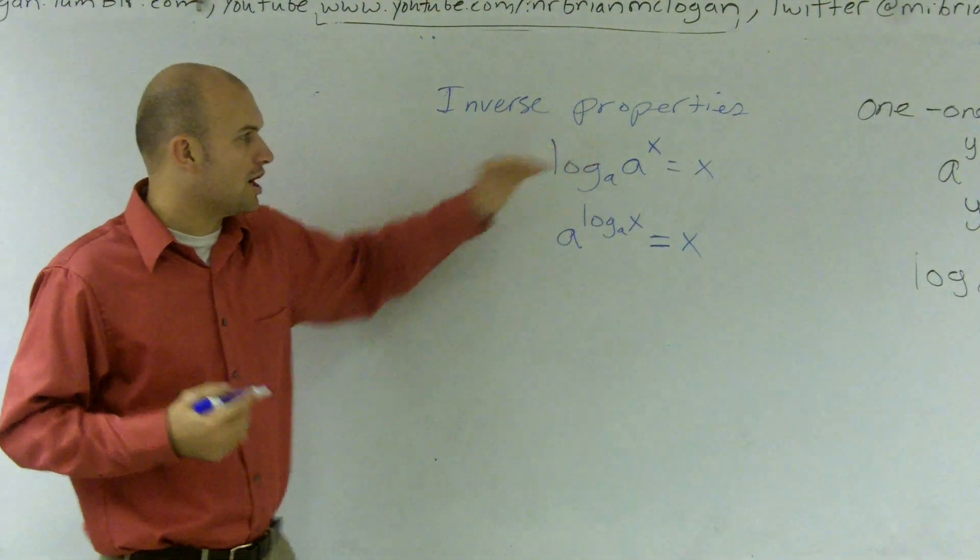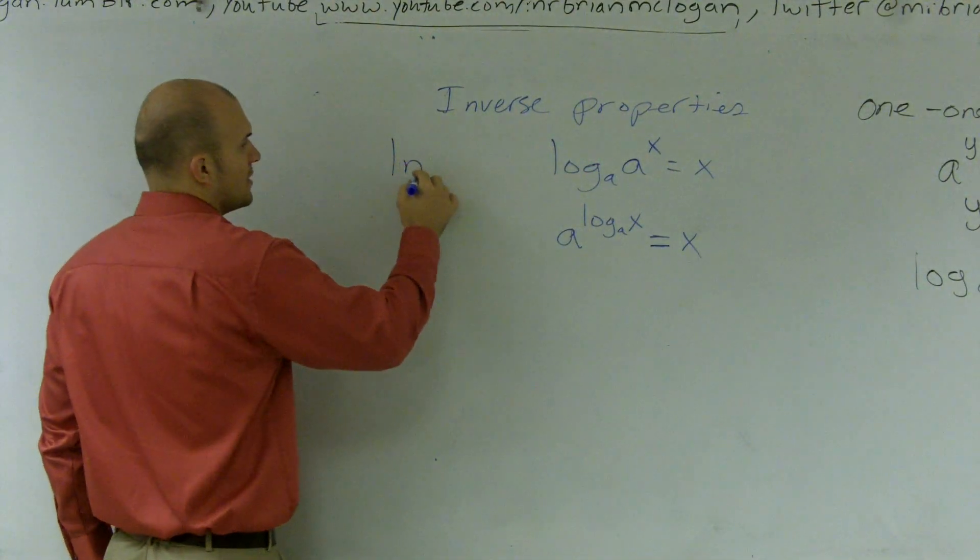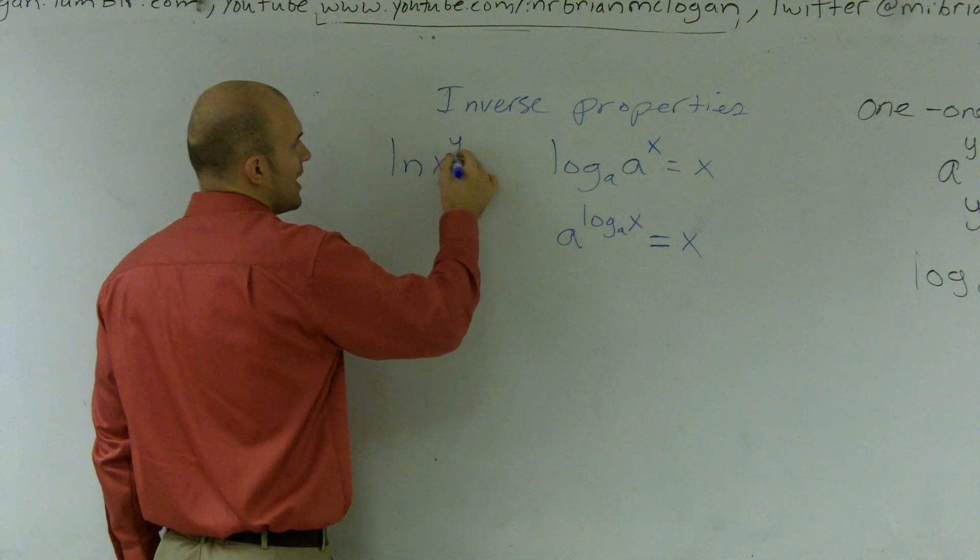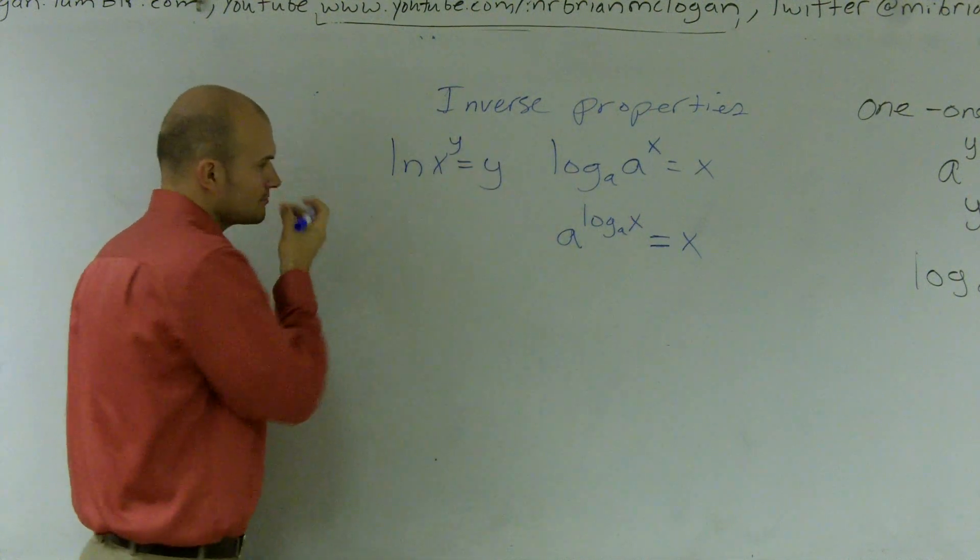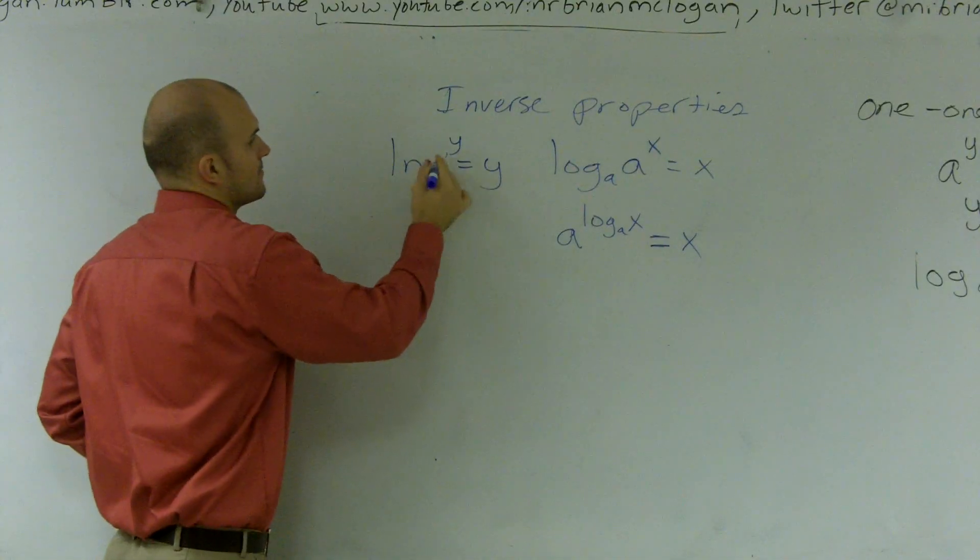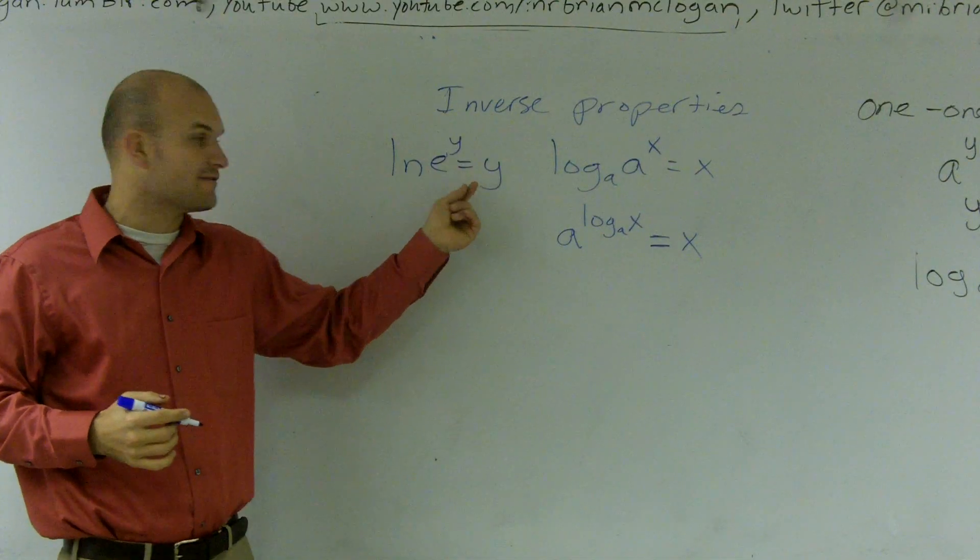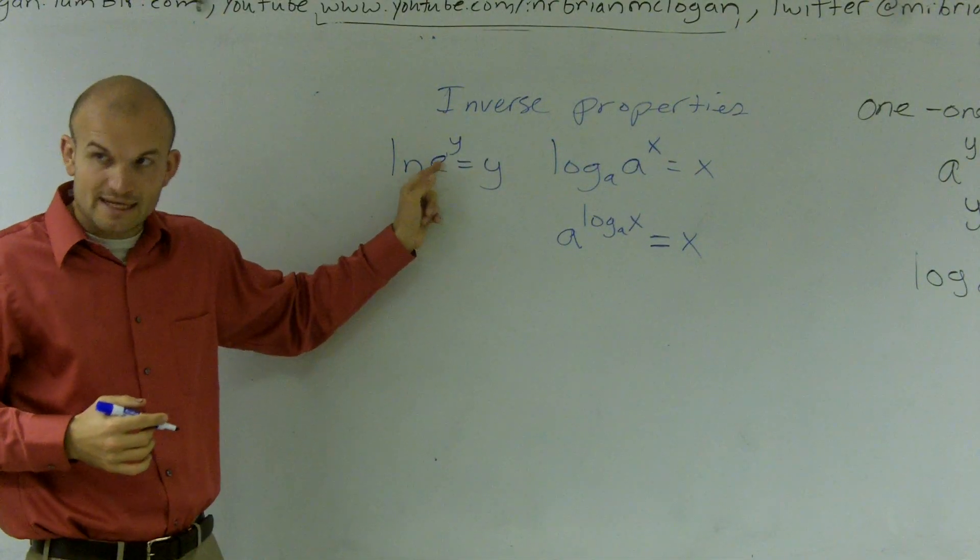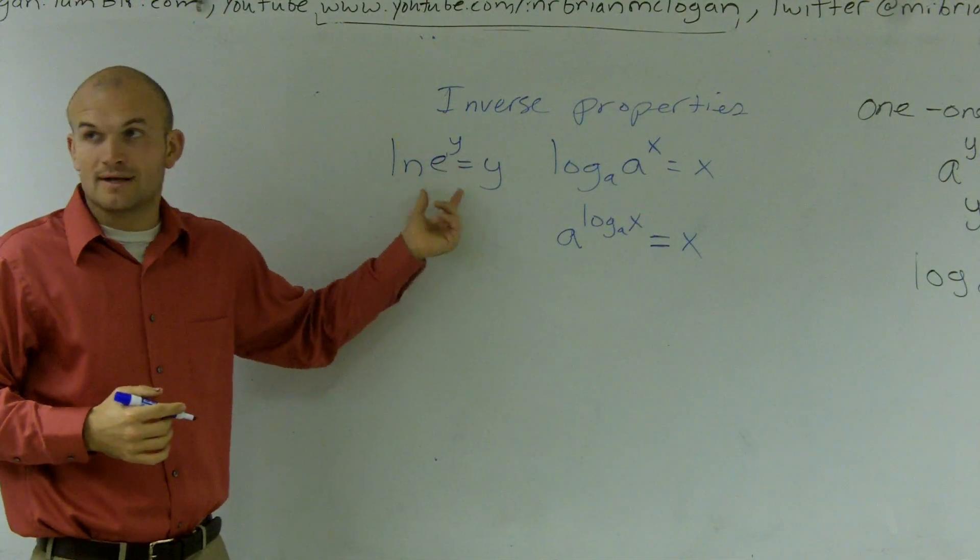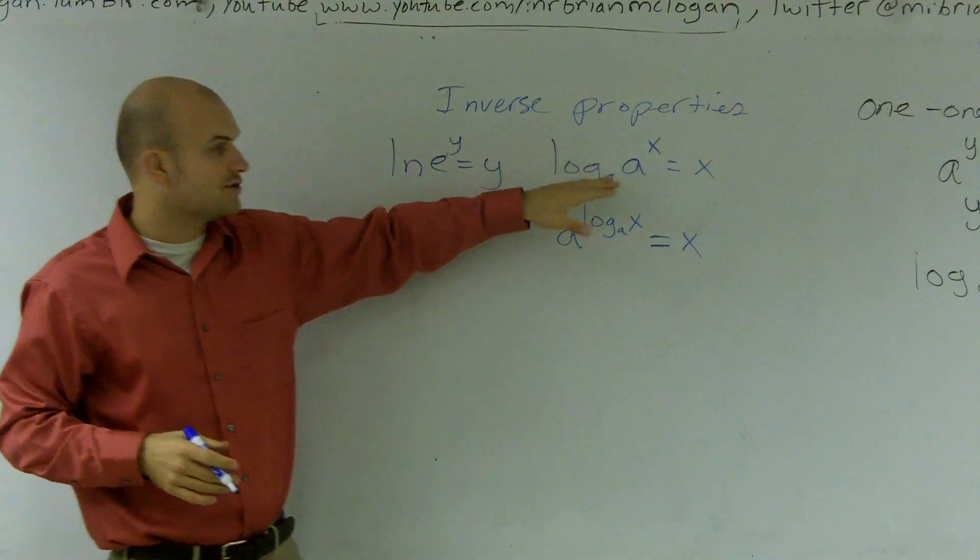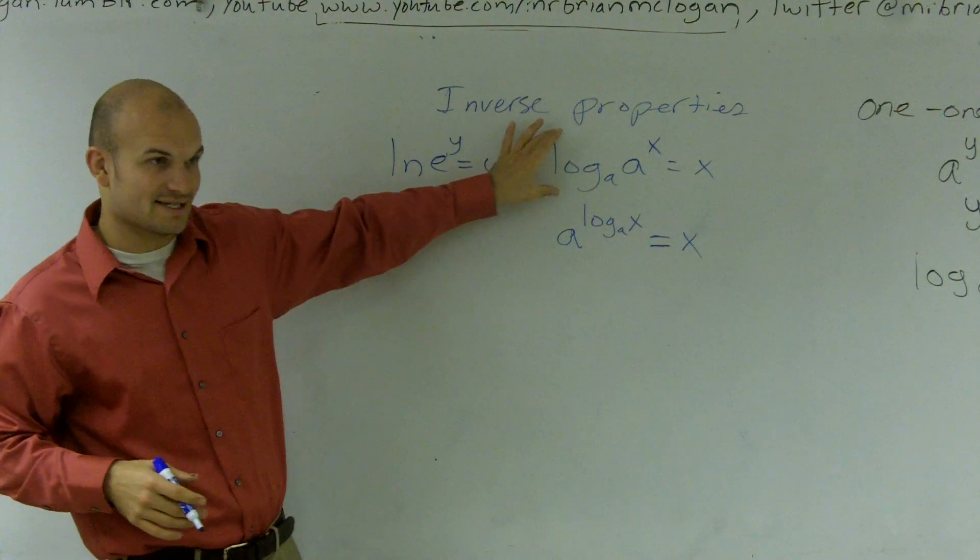All they really say is whenever you're taking a log, and this works for ln too, ln of e raised to the y equals y. Whenever you have your base and you're evaluating what your base is for the same logarithm, like evaluating for e base e, that's going to equal one. So if I have it raised to an exponent, that equals what my exponent is. So you guys have to understand this. This is very important.